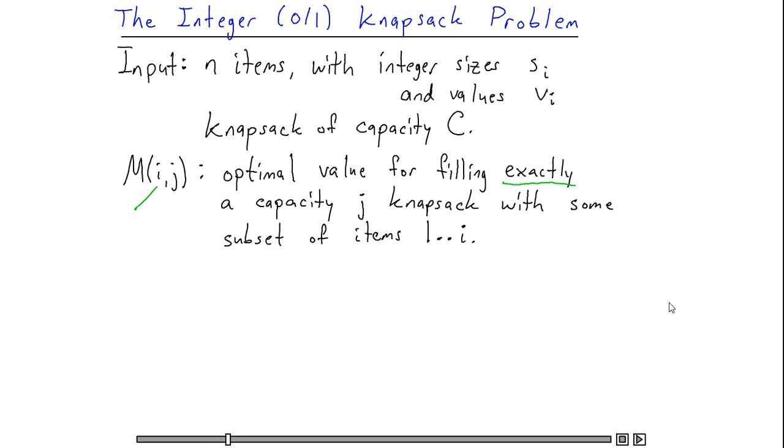So since i can range from 1 up to n, and j can range from 1 up to c, I have a total of n times c subproblems. I can compute m i j in terms of smaller subproblems by taking the maximum of two quantities.